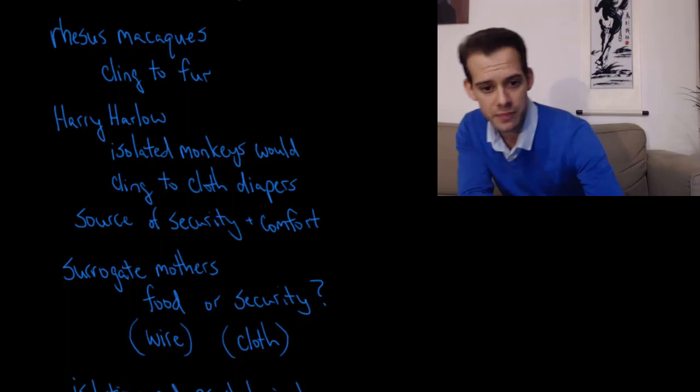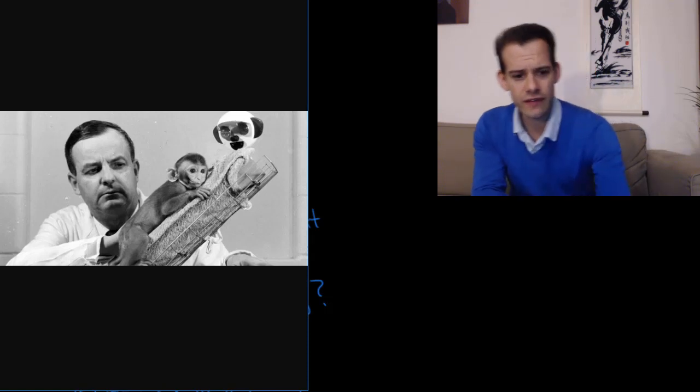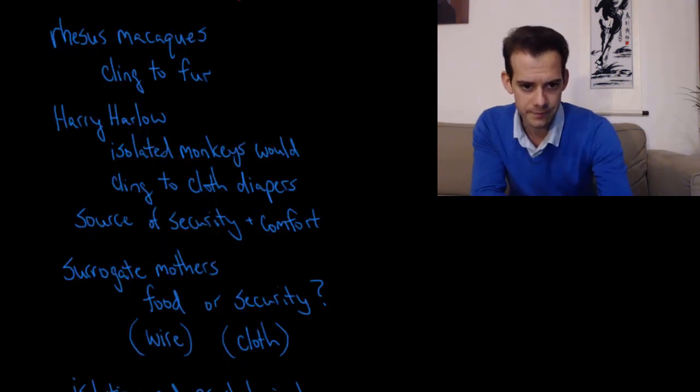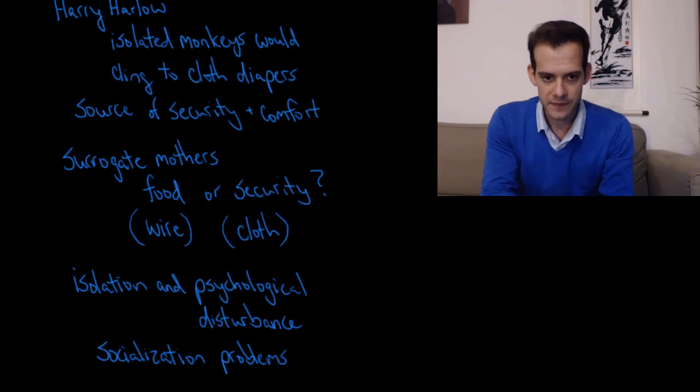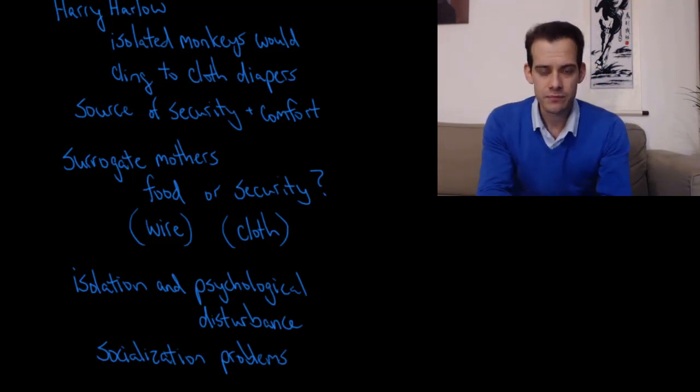What Harlow found is that if he raised monkeys in isolation where they didn't have a real mother to cling to, they would cling to cloth diapers that were being used, and they would use these as a source of security and comfort. Harry Harlow investigated this further by looking at surrogate mothers that he created. He wondered whether the young monkey attaches to the mother because she's a source of food or because she provides some sense of comfort or security that maybe these cloth diapers were mimicking.